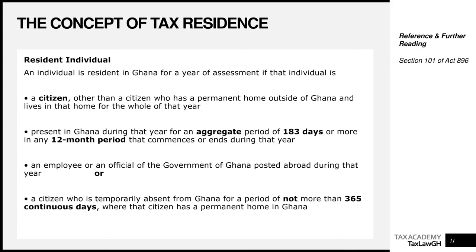Think about people like footballers — they usually play outside Ghana, but if you come home for holidays and go back, once you step back here you've usually broken tax residence and will be deemed still resident in Ghana. So a citizen who is outside Ghana temporarily for not more than a full 365-day period will still be deemed as tax resident when they have a permanent home in Ghana.